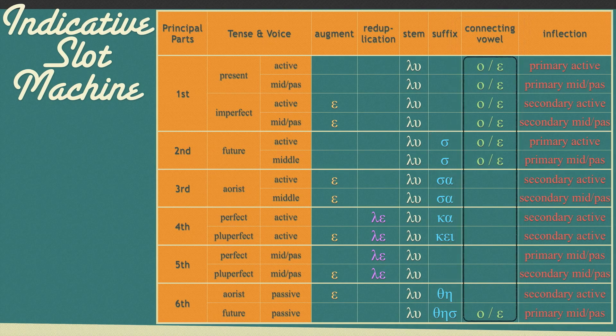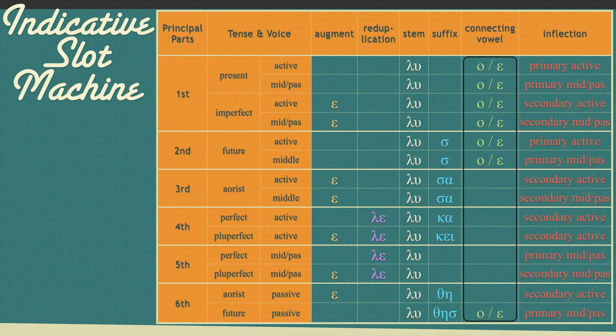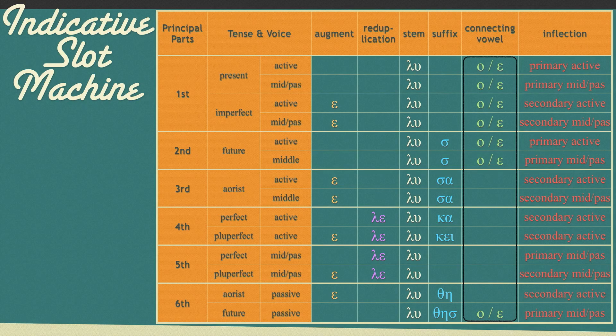Slot 5 is the connecting vowel which occurs in numerous tense and voice combinations. This too can cause issues because of vowel contraction. So if the stem of a verb ends in a vowel and a connecting vowel is added, we will see vowel contraction.